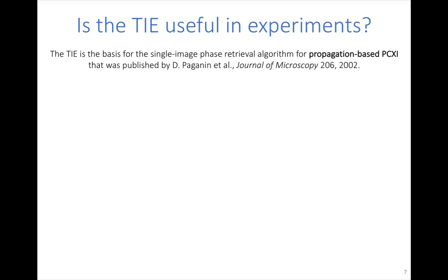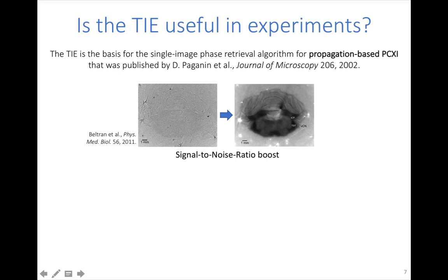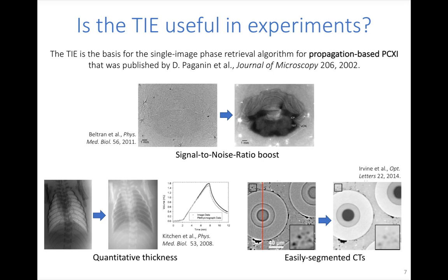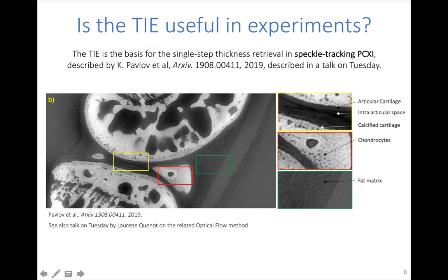The transport of intensity equation is the basis for a single-image phase retrieval algorithm by David Paganin et al., going from a raw propagation-based phase contrast image to a retrieved thickness image. This provides a significant signal-to-noise ratio boost — demonstrated here in a CT of a brain — enables quantitative thickness measurement such as tracking air volume in the lungs, produces CTs more easily segmented with distinct grey levels per material, and has also been applied to speckle tracking phase contrast X-ray imaging by Konstantin Pavlov et al.